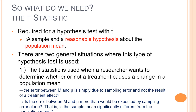What we need to test a hypothesis with the t-test is a reasonable hypothesis about the population mean. There are two general situations where this type of hypothesis is used: when a researcher wants to determine whether or not a treatment causes a change in a population mean — where the difference between the sample mean and the population mean is simply due to sampling error and there was no treatment effect, or there is a treatment effect and we want to know if that difference between the sample mean and the hypothesized population mean is more than what we would see by chance.